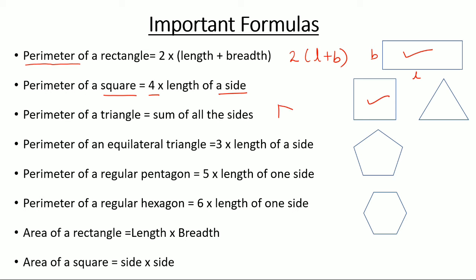Perimeter of a triangle equals the sum of all the sides. Say the triangle is something like this, then let A, B, C be the side lengths. So the perimeter would be A plus B plus C.